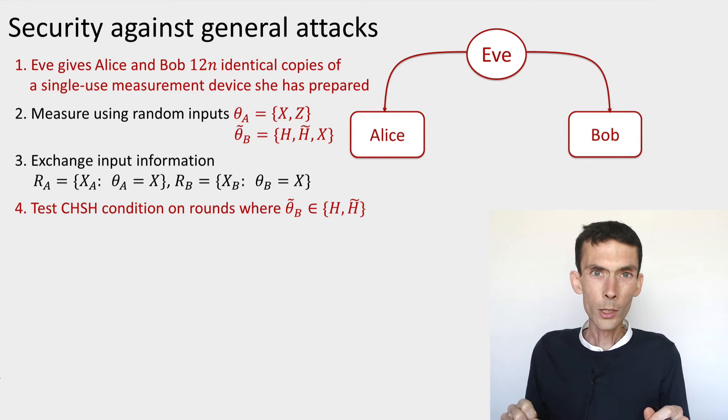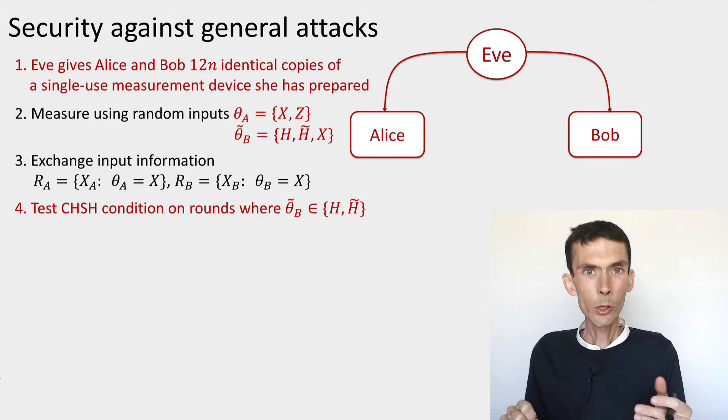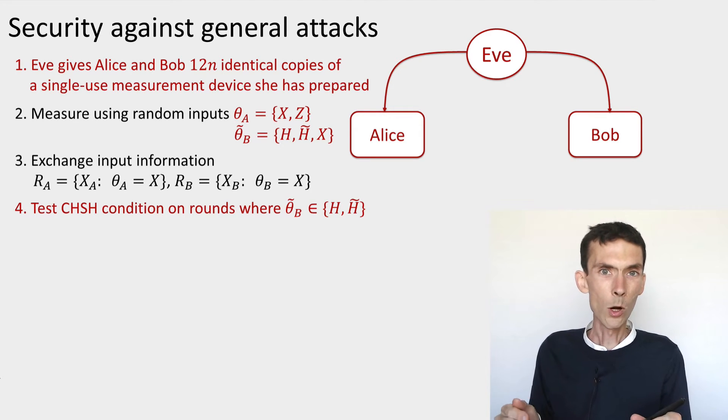So let's remember our analysis for the case of collective attacks. So there were two steps. In the first step, we used the CHSH-based guessing game to conclude a bound on the conditional min-entropy of Alice's outputs in any one given round.